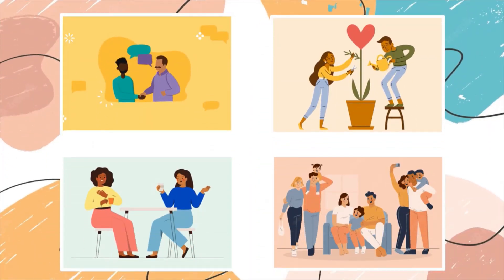Shown on the screen are pictures of people. Let's identify their relationship with one another. In the first picture, we can see that the two men are having a conversation. They are shaking their hands with each other. Handshaking is a type of greeting commonly used in businesses. Therefore, I guess that the two of them are business partners.